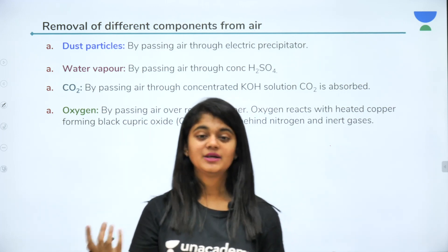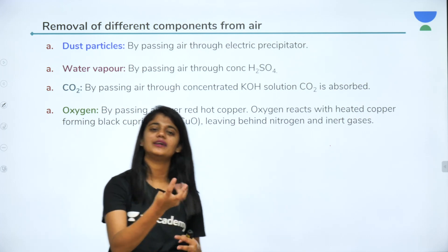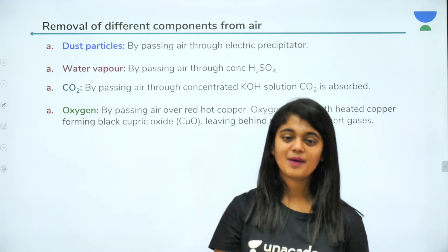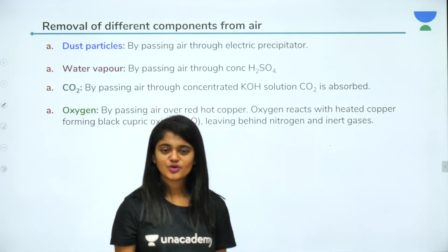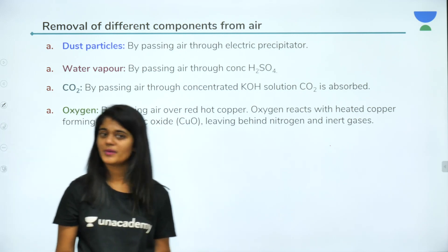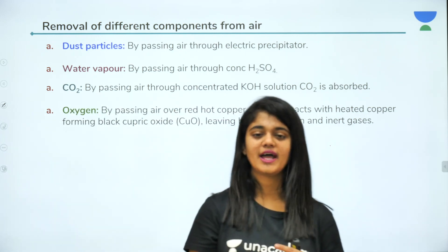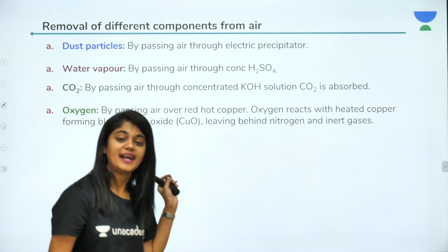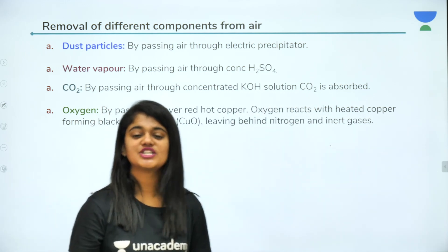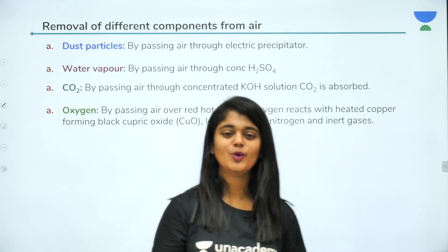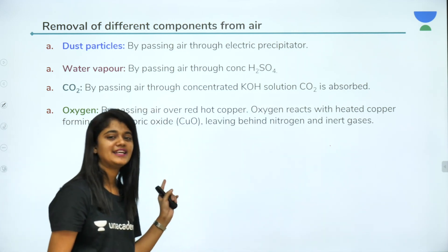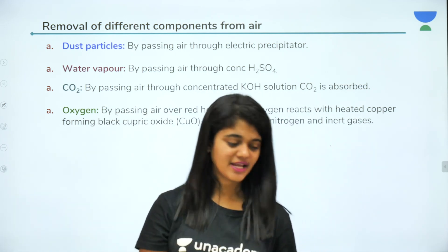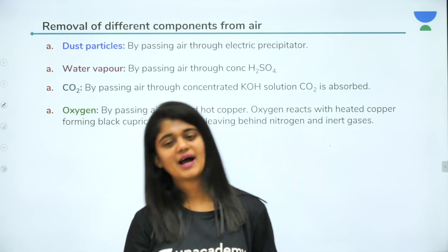Water vapor is removed by passing air through concentrated sulfuric acid, which absorbs all the moisture content. Carbon dioxide is removed by passing through concentrated KOH solution, forming K2CO3. Oxygen is removed by passing air over red-hot copper — oxygen reacts with copper to form black copper oxide — leaving behind nitrogen and inert gases. So almost all components have been removed from air.